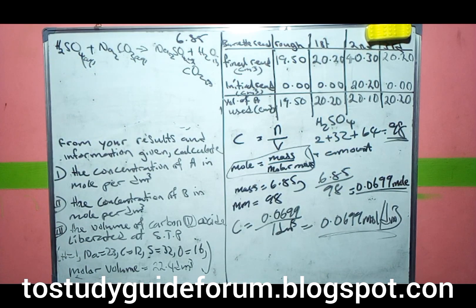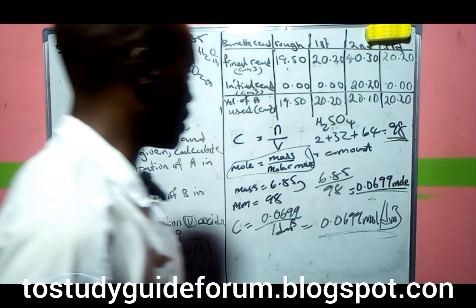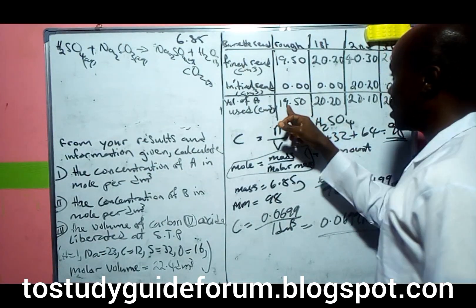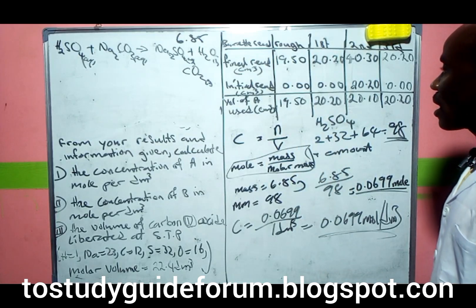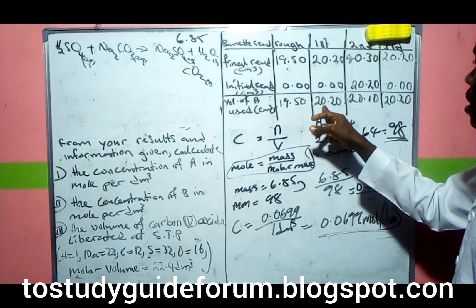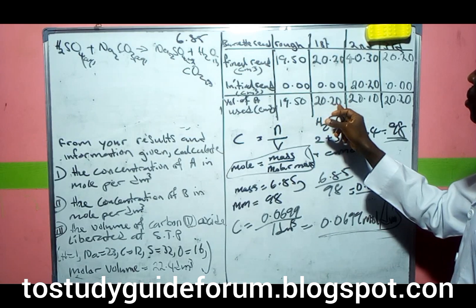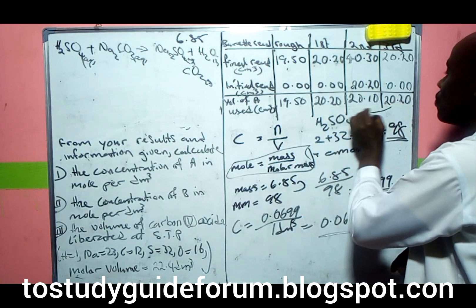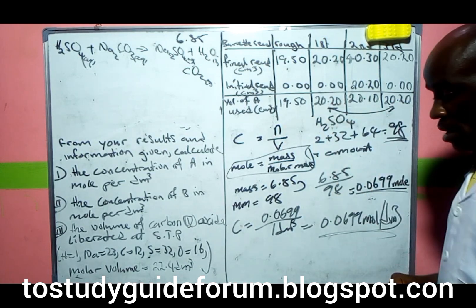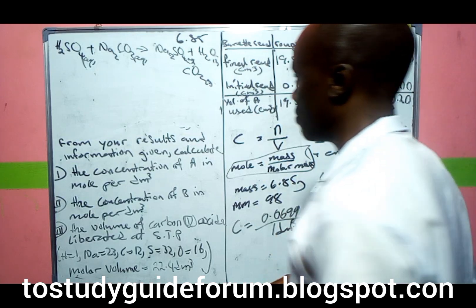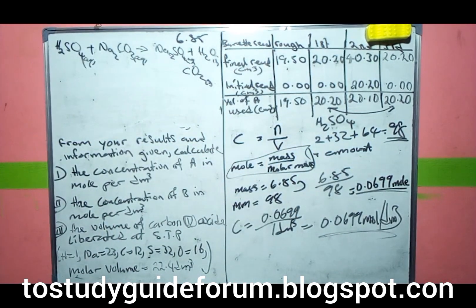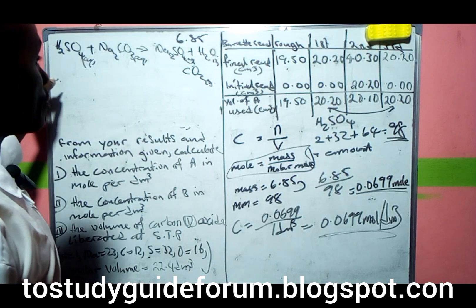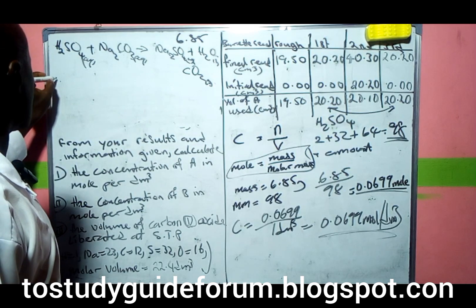Now from the table, we have values of 20.20 and 20.10. These values are very uniform. Let's calculate the average of A used.